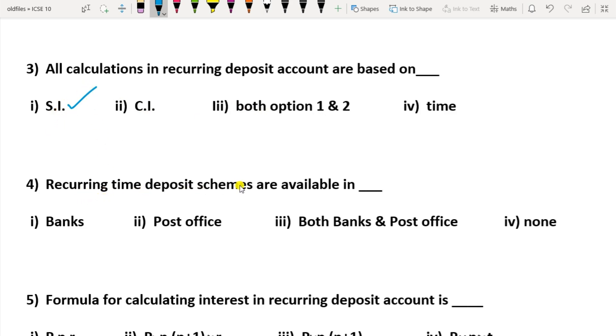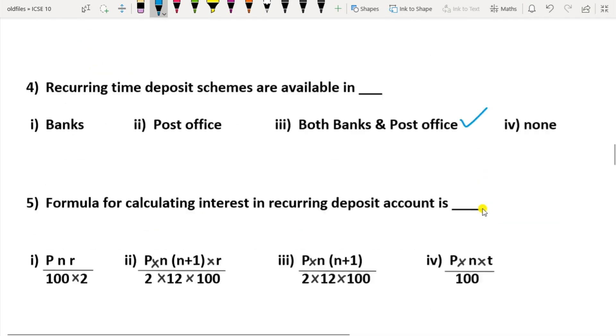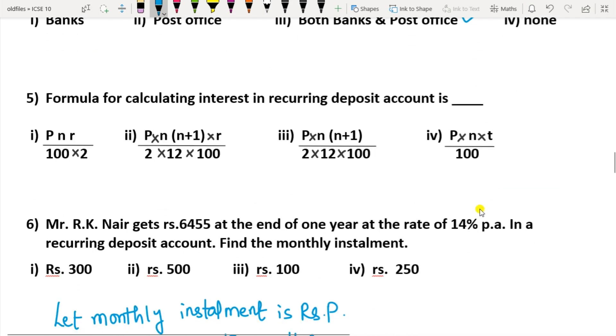Recurring time deposit schemes are available in - banks, post office, both banks and post office, or none. So it is available in both banks and post office. Formula for calculating interest in recurring deposit account is - just now we have seen, the formula is P×n(n+1)×R/(2×12×100). So option 2 here is the correct option.